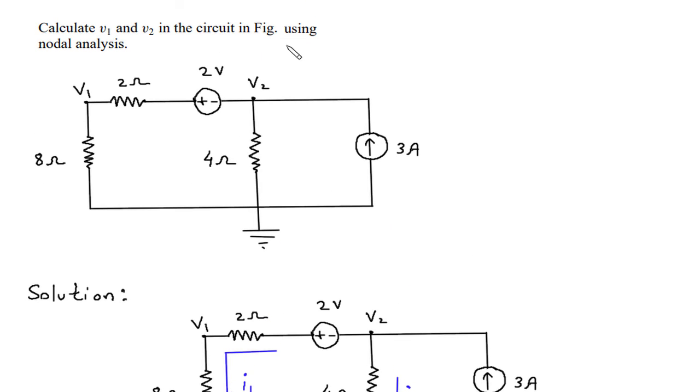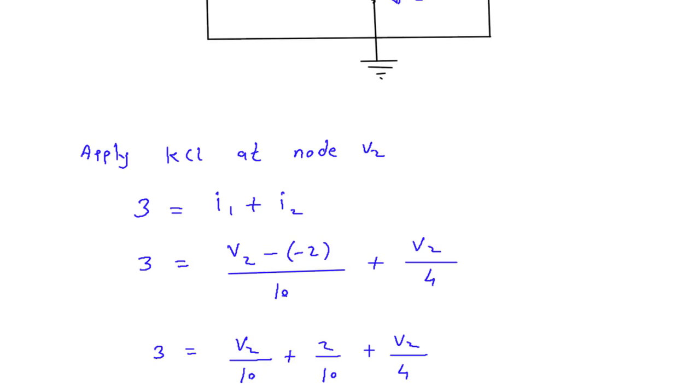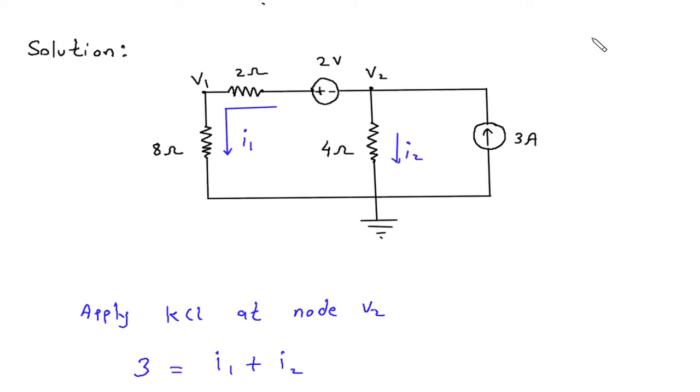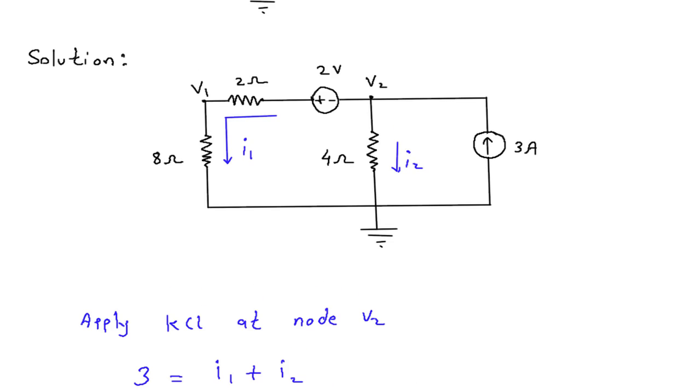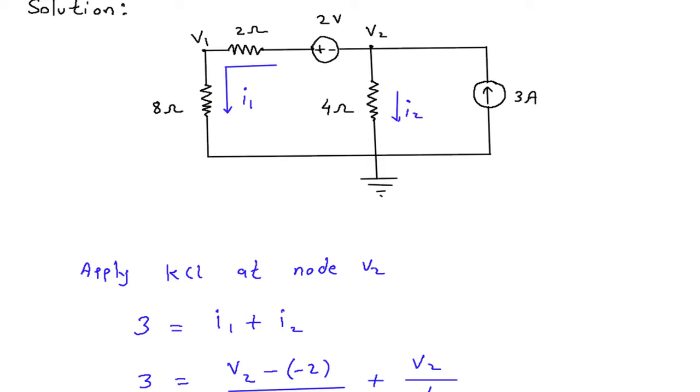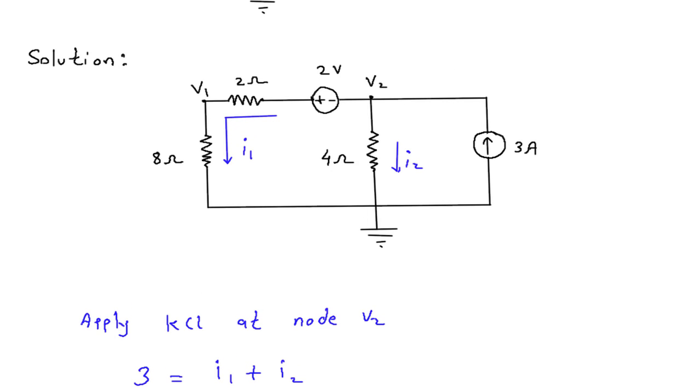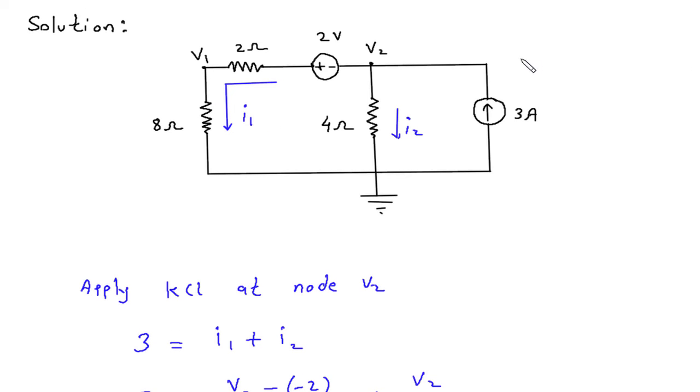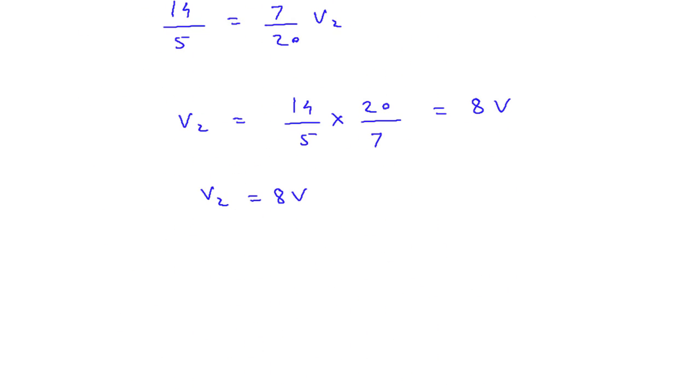We have to find V1 and V2, so we have to find next V1. To find V1, V1 is equal to 8 into I1.